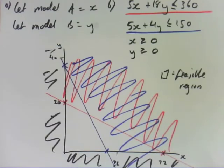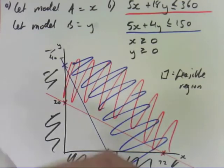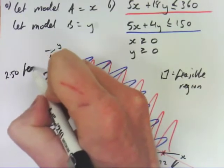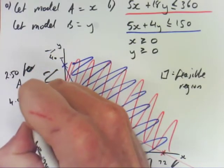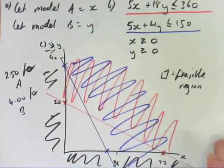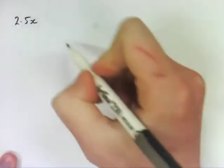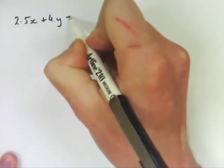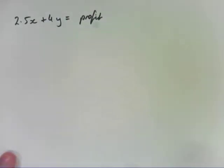So the next part is to state the objective function which means we need more information. So the next bit of information is the company makes $2.50 for each Model A and $4 for each Model B that they sell. So the objective function, that part there was C, if we're making $2.50 for every A and $4 for every B, that's our profit. That's our objective function. So the information is right there in the question, we just need to write it down.